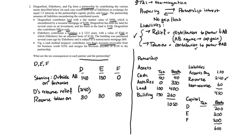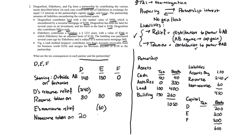Next, E has non-recourse relief of $60, recorded as negative $60. The $60 non-recourse liability is also taken on and must be allocated. Non-recourse liabilities are allocated based on the profit ratio. Since profit ratios are one-third each, each partner is allocated $20 — recorded as positive $20 for each.